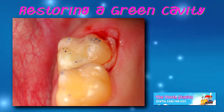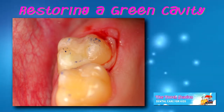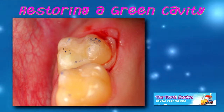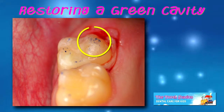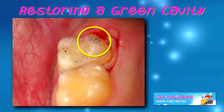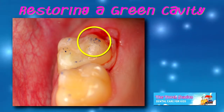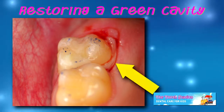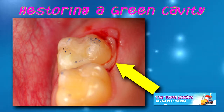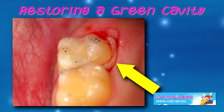This last photo is of the completed composite restoration with the rubber dam removed. The blue marks are from articulating paper and indicate if the filling material is too high or too large. The rubber dam clamp sometimes leaves a mark on the gums that heals quickly.